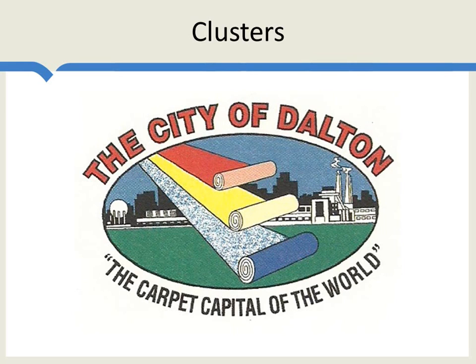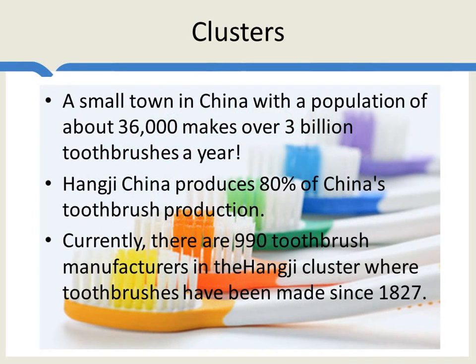An important fact about many industries is they're not spread randomly around a country or around the world. Take carpet, for example. For over 100 years, the city of Dalton has been known as the carpet capital of the world. Over 100 firms produce carpet in Dalton, Georgia, and combined they produce over 70% of the world's entire production of tufted carpet. Now, not all industries cluster, so which ones cluster and why do they cluster? Why did Dalton, Georgia become the carpet capital of the world? Industrial clusters are very common.